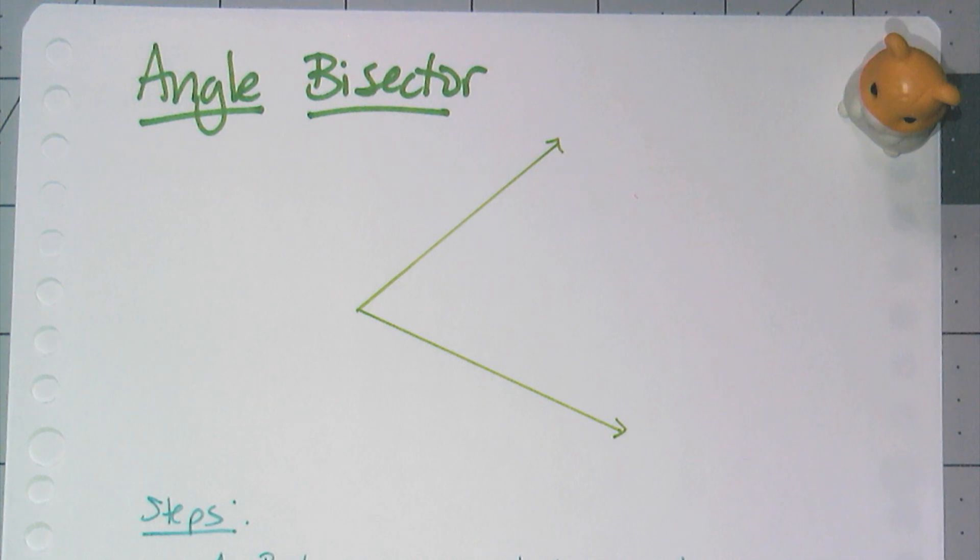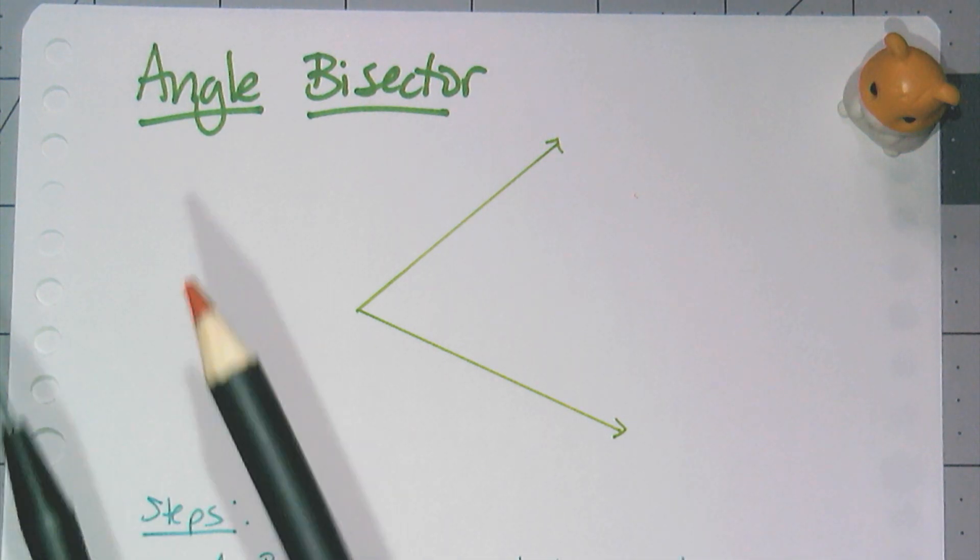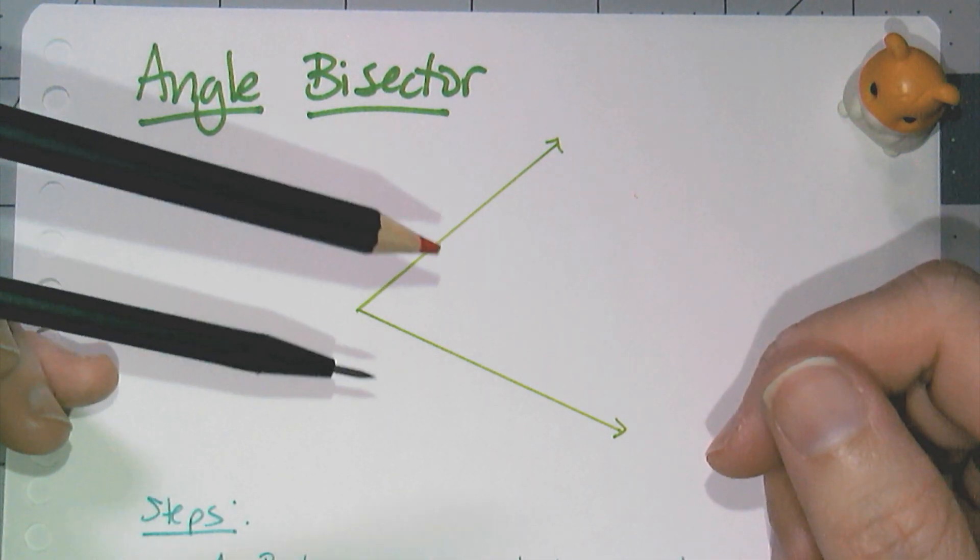In this video we're going to talk about how to construct an angle bisector. Remember, an angle bisector is a ray or a line that will cut an angle in half.